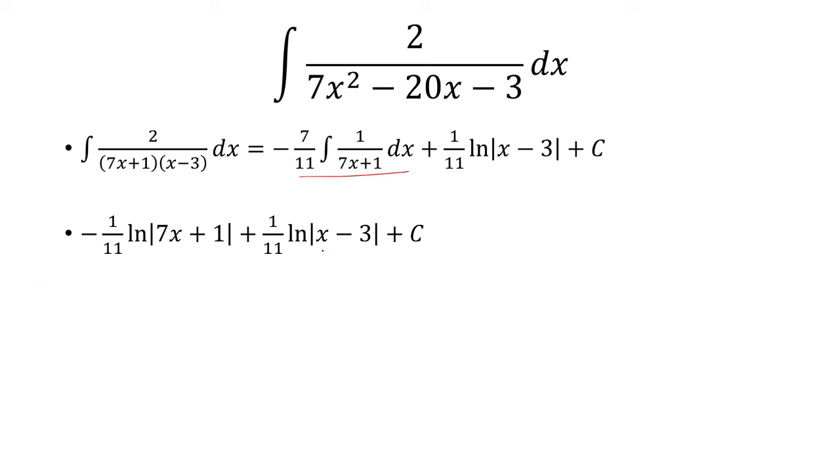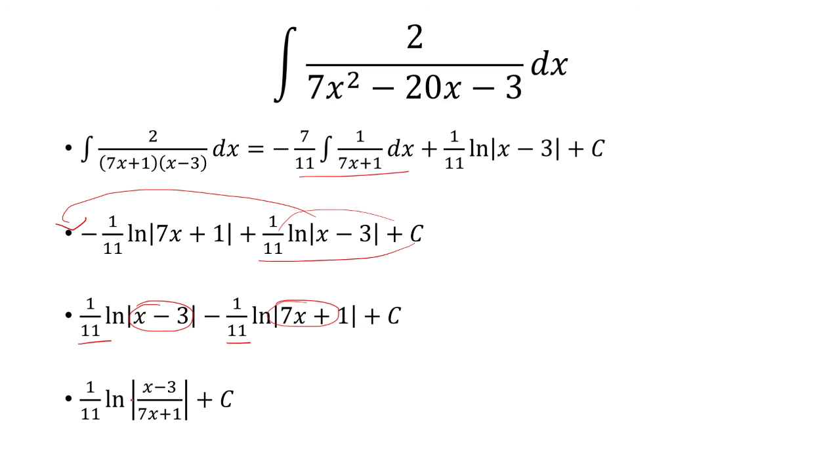I can continue to simplify this, so I'm just going to change the order of these. So I'm going to put this one first. So then the minus comes after. And because they have the same coefficient here, 1 over 11, I can actually take x minus 3 and divide it by 7x plus 1. Under 1 natural log. And so that is my final answer.